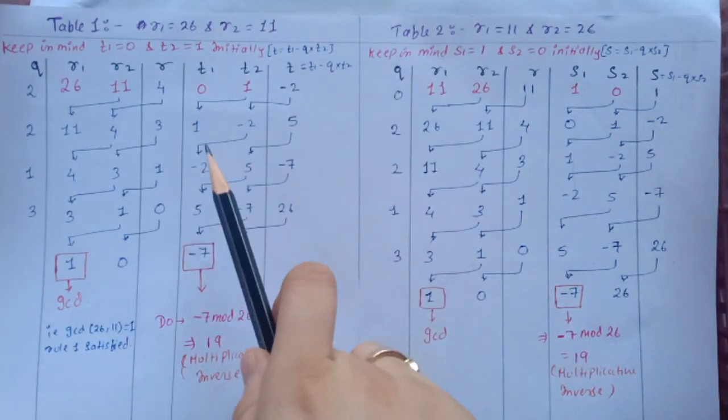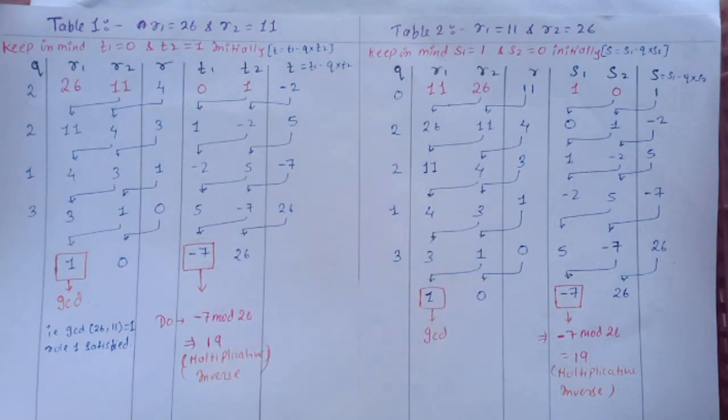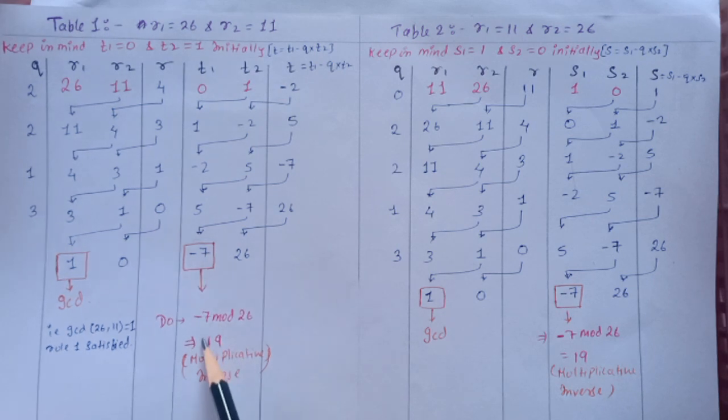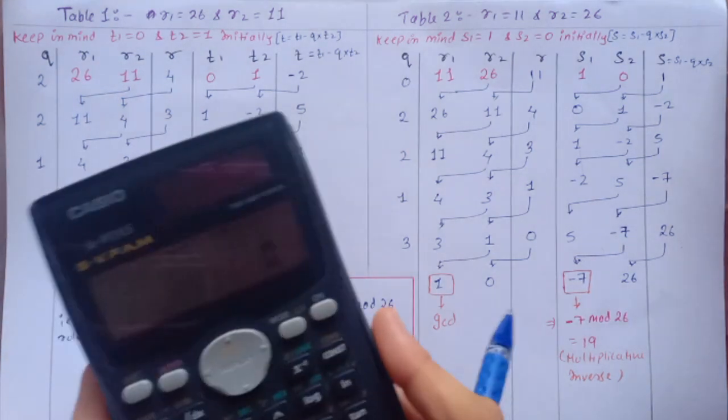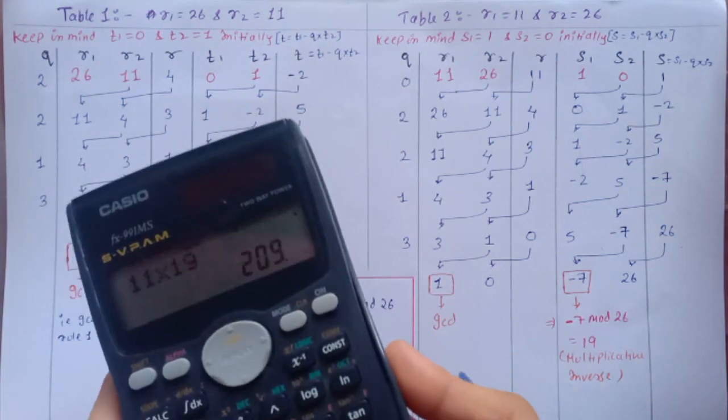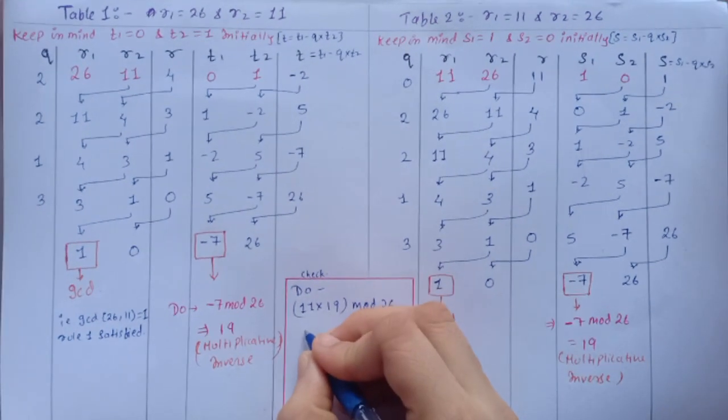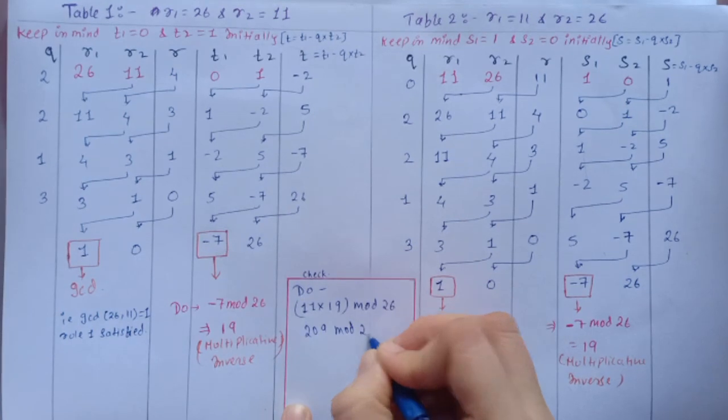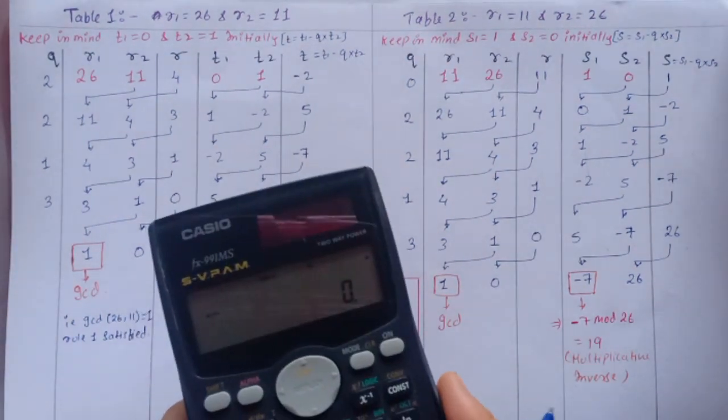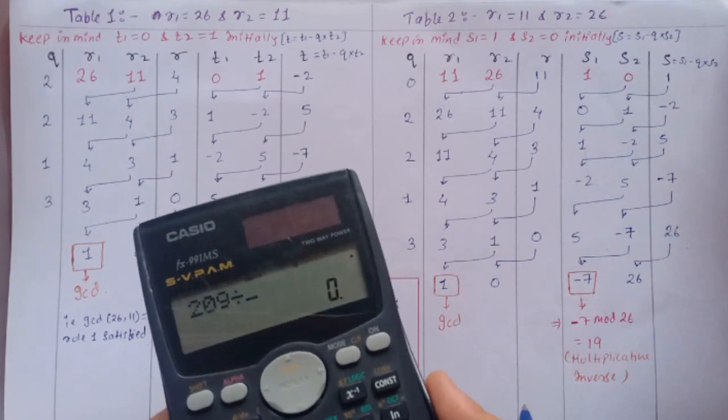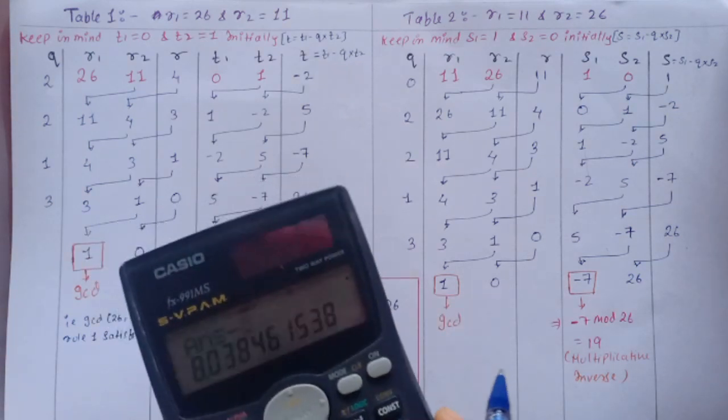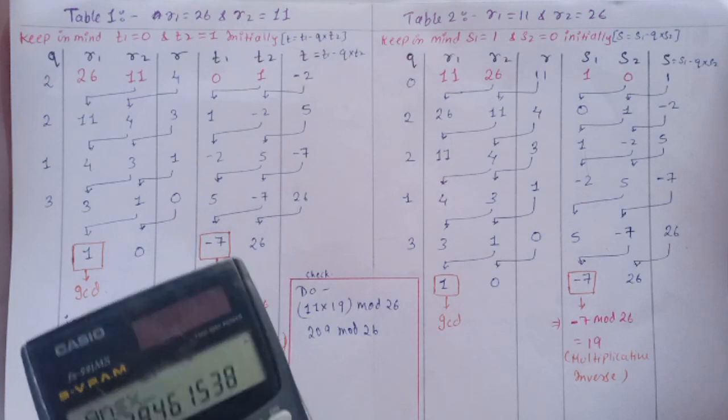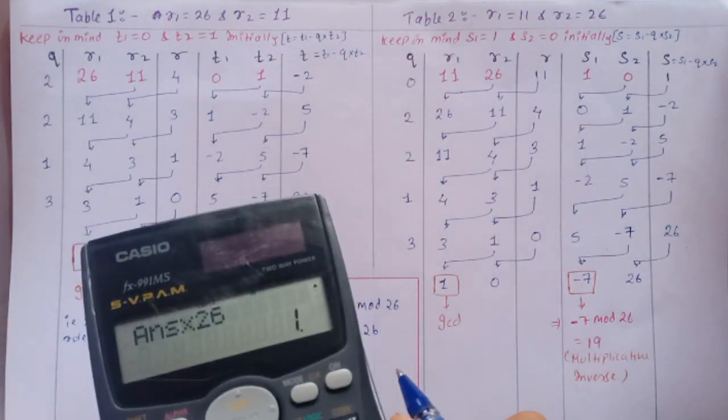Now we have to check whatever multiplicative inverse we have found is correct or not. So you have to do 11 into 19 mod 26. So 11 into 19 we get 209. 209 mod 26, so 209 divided by 26 we get 8 point something, so we subtract from 8. Whatever we get we multiply it with 26, so we get 1.